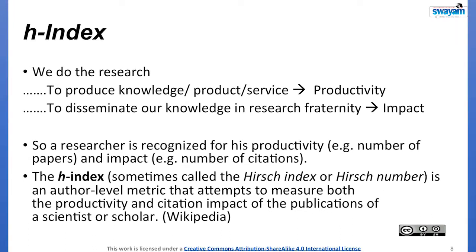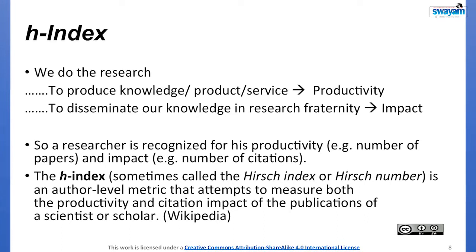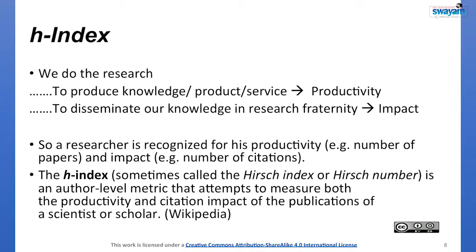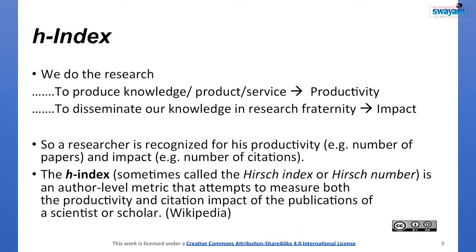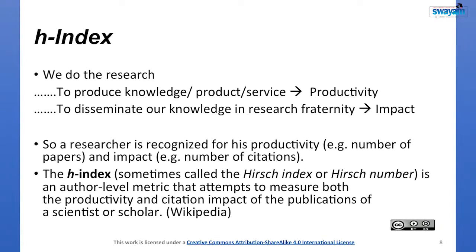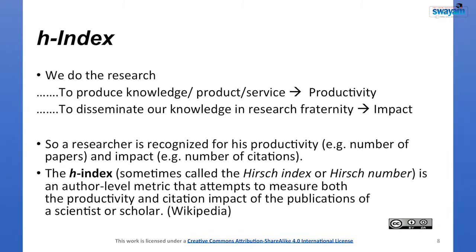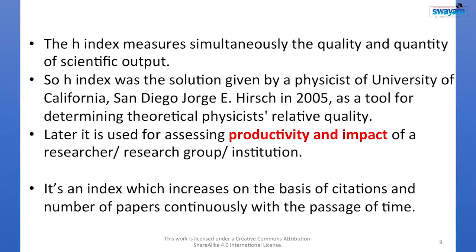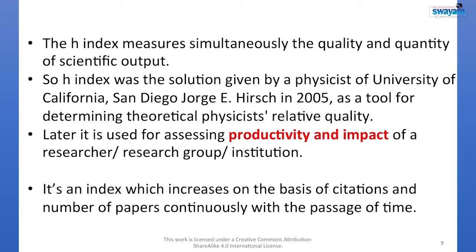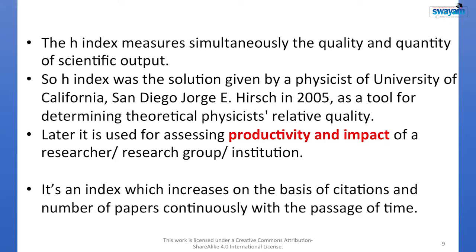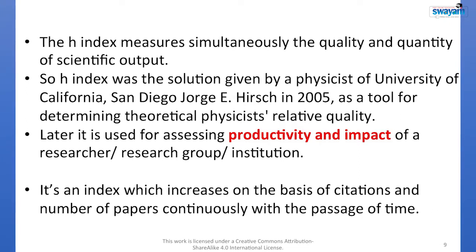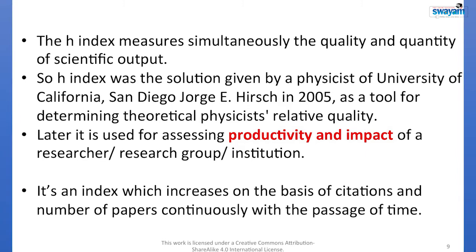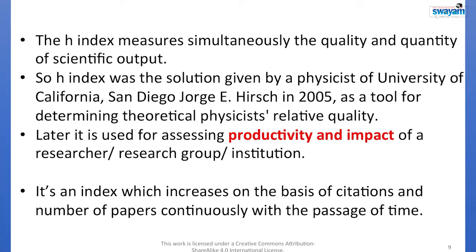A researcher is recognized for productivity — the number of papers — and impact — the number of citations. The H-index, sometimes called the Hirsch index or Hirsch number, is an author-level metric that attempts to measure both the productivity and citation impact of the publications of a scientist or scholar. The H-index measures simultaneously the quality and quantity of scientific output.